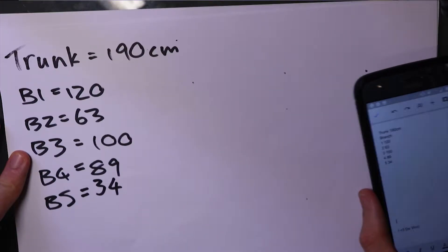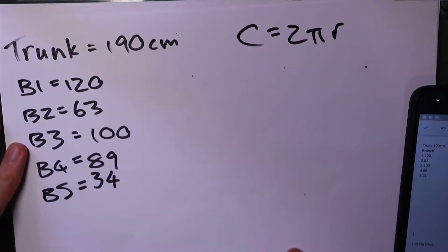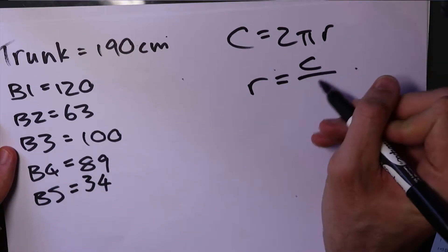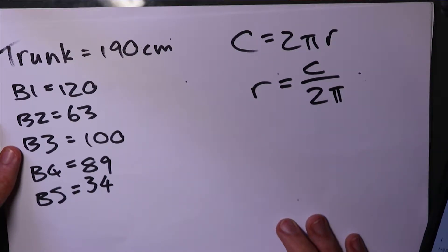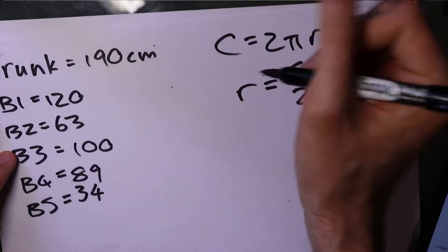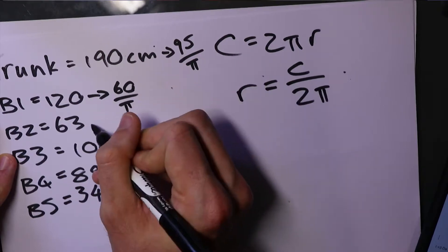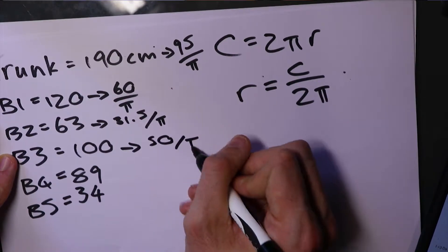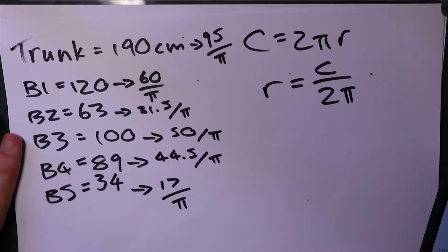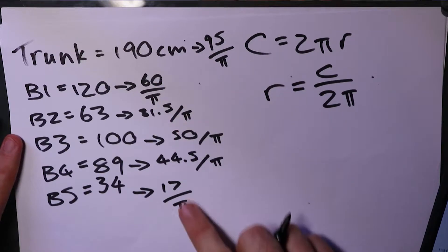Now remember, we took the circumference here. So twinkle, twinkle, little star, circumference equals two pi r. So to rearrange this, the radius equals circumference over two pi. So quick calculation, we've got the trunk is... Okay, so now we've got our radiuses here. So we just use this calculation with the circumference to get our radius.